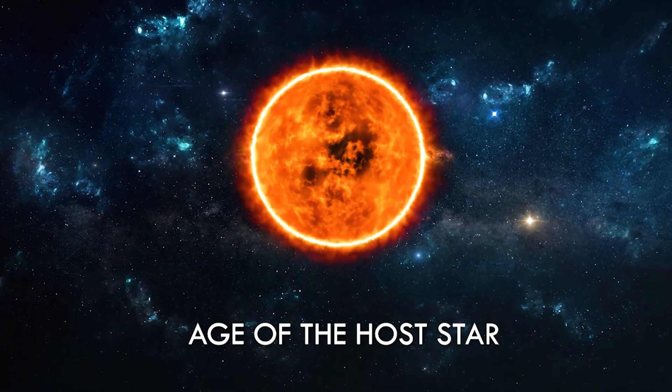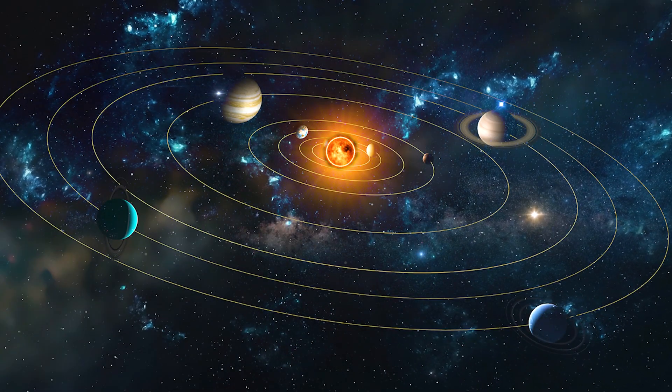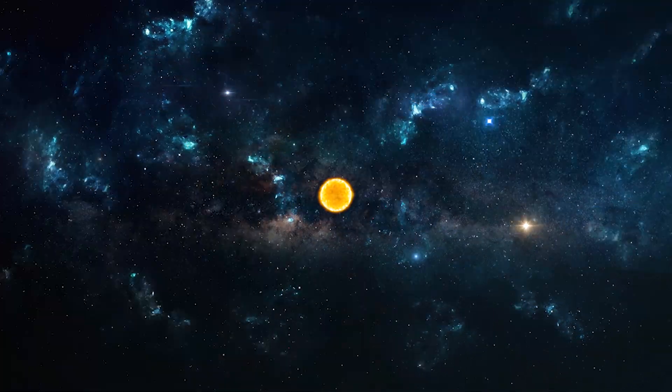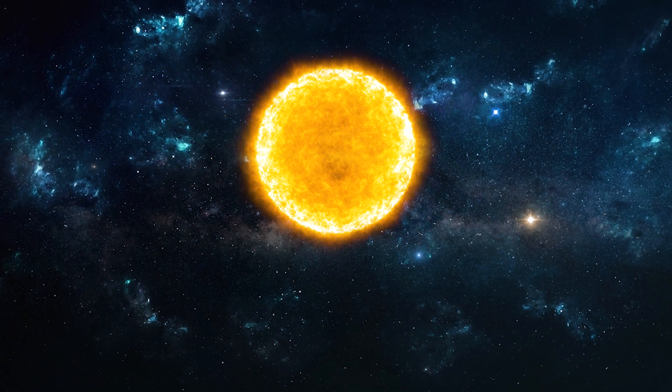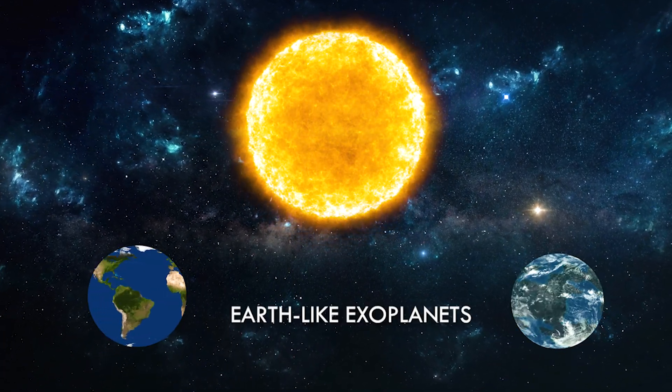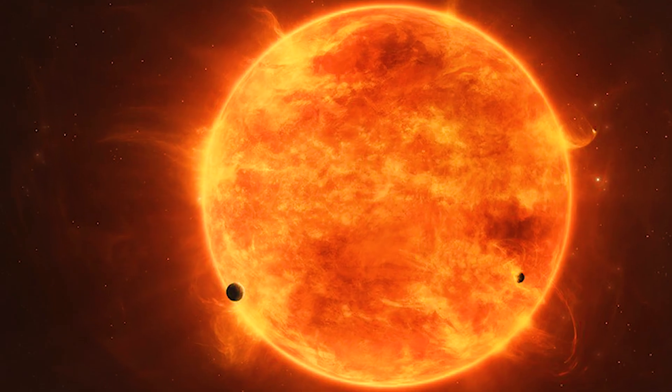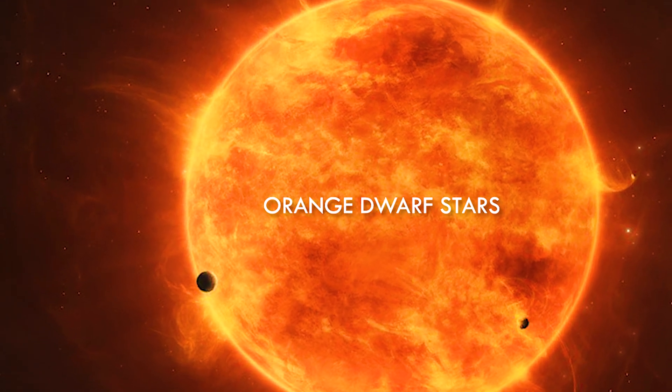The first criterion is the age of the host star, which is the star at the center of a solar system. Typically, scientists search for sun-like stars in space to find Earth-like exoplanets. However, they are now also examining orange dwarf stars,